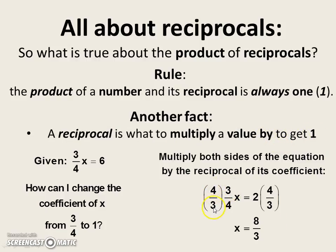Four times three is twelve. Three times four is twelve. Twelve divided by twelve is indeed one. So multiplying by the reciprocal of the coefficient does make it one.